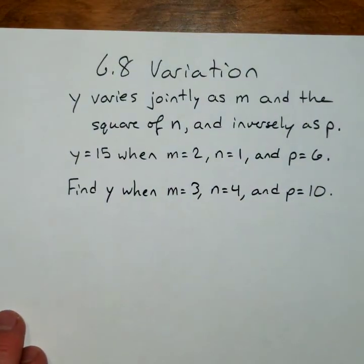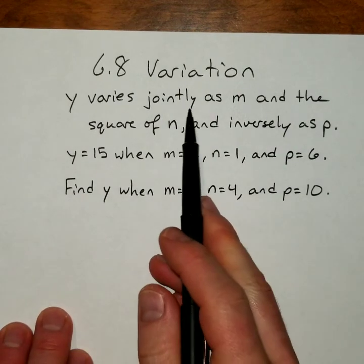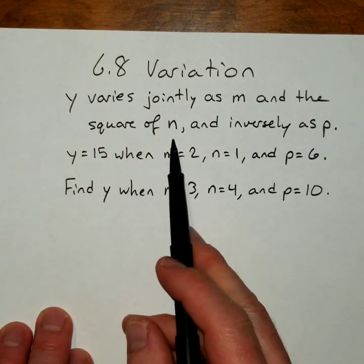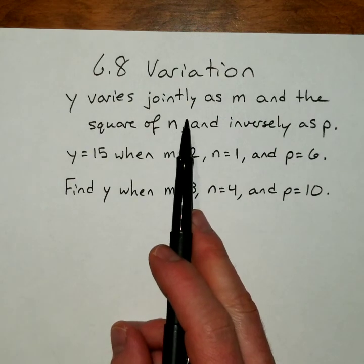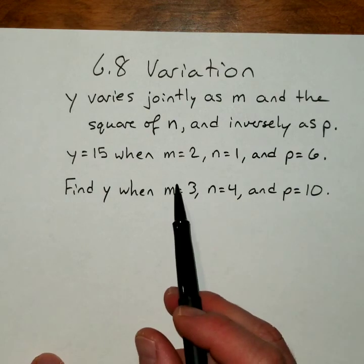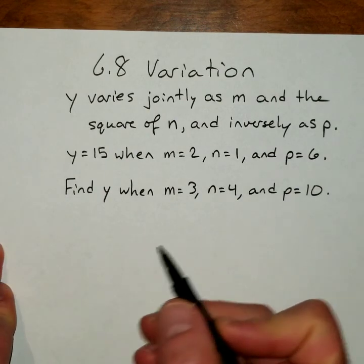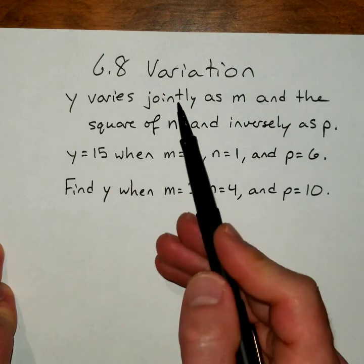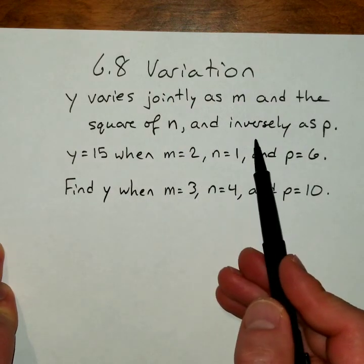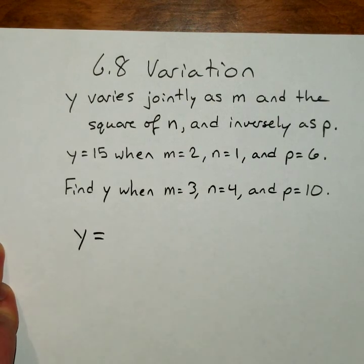Final example. This one's a bit longer. And it includes many more variables. It says y varies jointly as m and the square of n. So jointly is a direct variation with more than one thing. And inversely as p. Sounds kind of crazy and complicated. But let me explain. There's both a direct variation and an inverse variation in the same equation. So we're going to start with our y value, and then we're going to set up the equation.